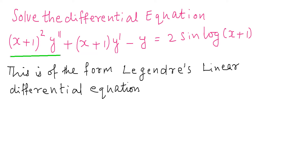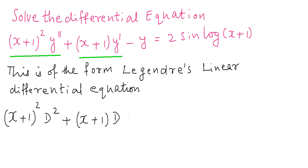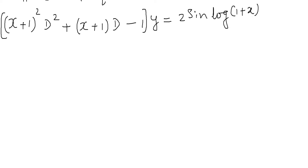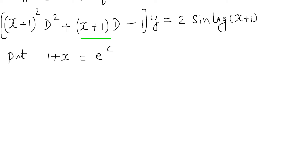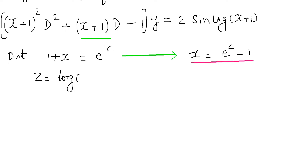Now (x+1)² d²/dx² + (x+1) d/dx − 1, applied to y, equals 2 sin(log(x+1)). After identifying the equation as Legendre linear, we substitute x+1 = e^z. From this, we get x = e^z − 1, and z = log(x+1).